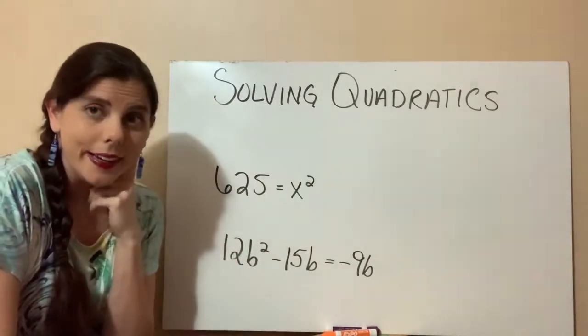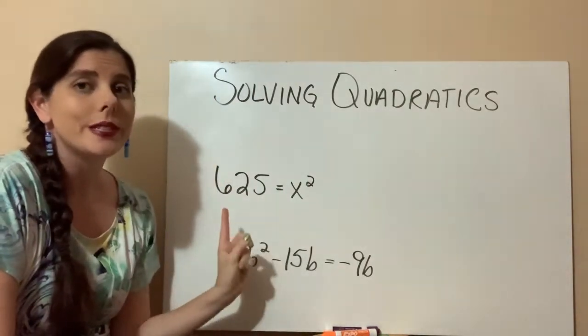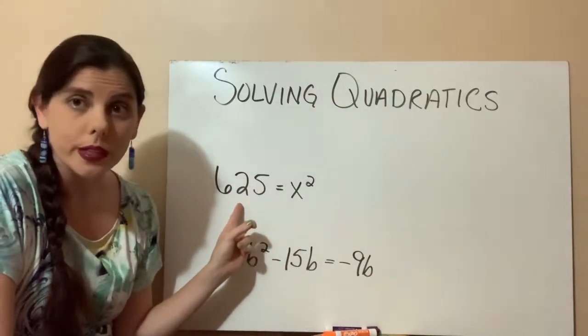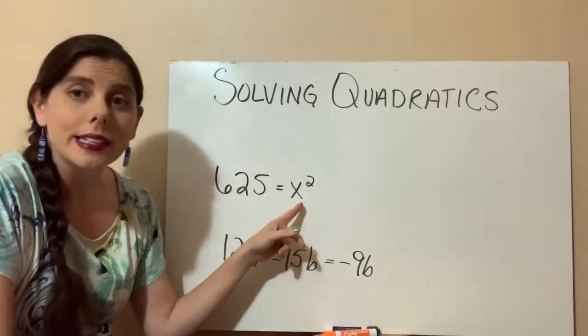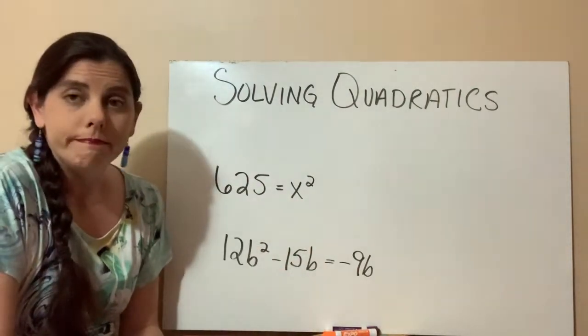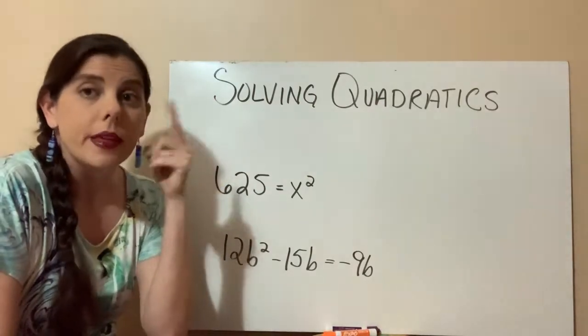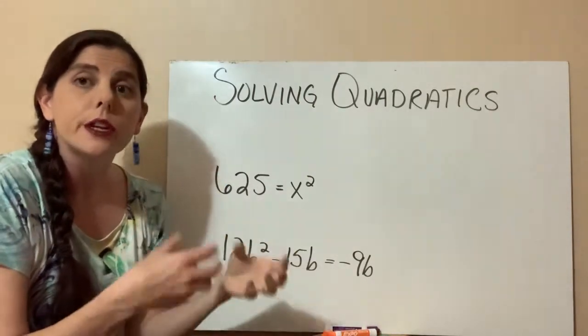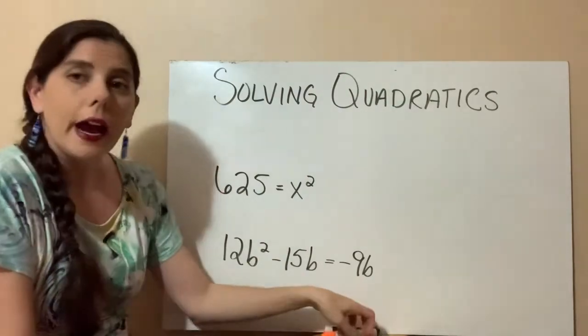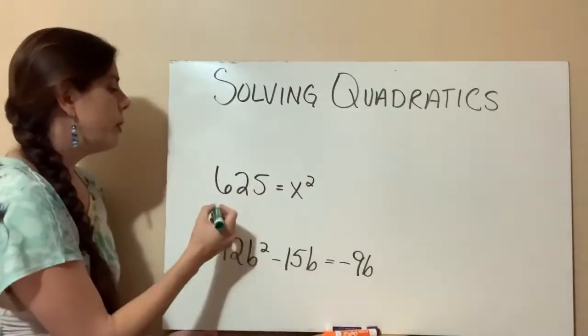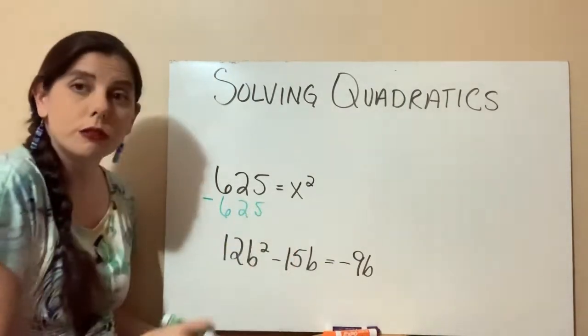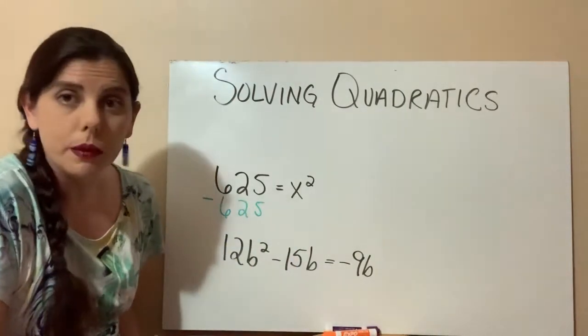But when I look at it, I can see that both of these terms are perfect squares. I can take the perfect square root of 625, and I can take the perfect square root of x squared. So that's a clue to me. This might end up being a difference of squares, but right now it's not. So what do I have to do? Well, if we remember our properties of equality from chapter 2, we're still going to be using them.